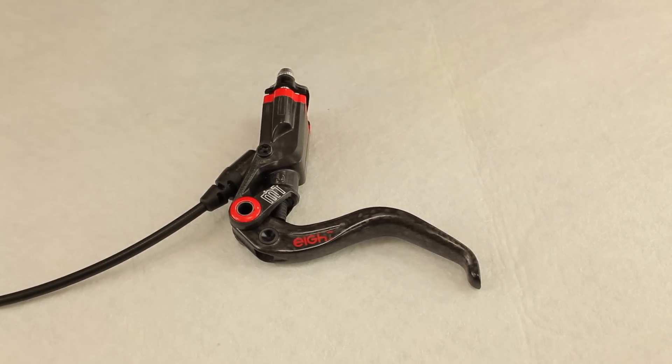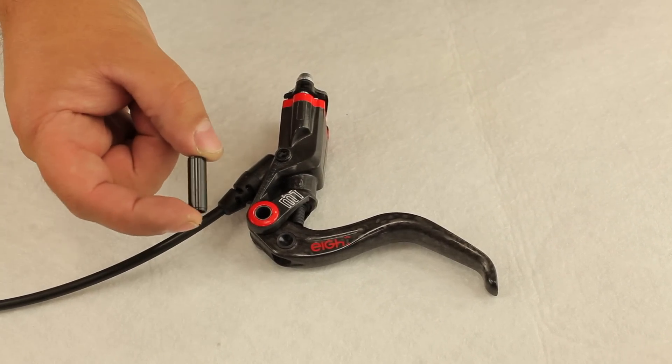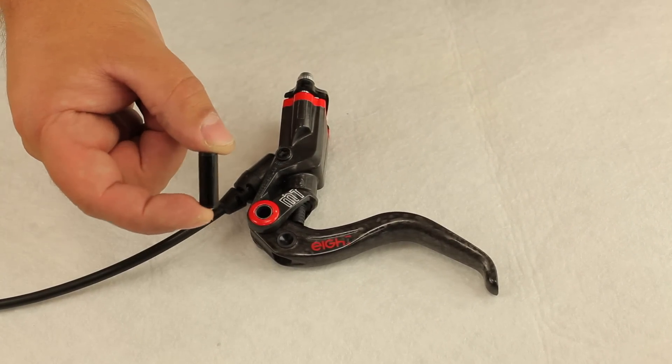With our current MT disc brakes the lever blade is not bolted to the master housing but is mounted on a pressed-in hollow bolt.